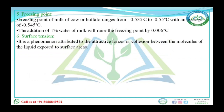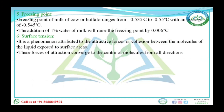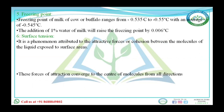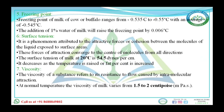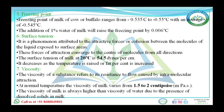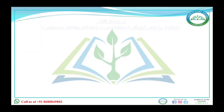Surface tension is the phenomenon attributed to the attractive force or cohesion between molecules of the liquid exposed to the surface — all forces converge toward the center, decreasing the surface area. The surface tension of milk at 20 degrees Celsius is 54.5 dynes per centimeter. Increasing temperature decreases surface tension because it increases kinetic energy of the particles, which decreases the force of attraction. Viscosity refers to the resistance to flow caused by intramolecular attractions — at normal temperature viscosity of milk varies from 1.5 to 2 centipoise. Viscosity of milk is always higher than water due to dissolved solids.